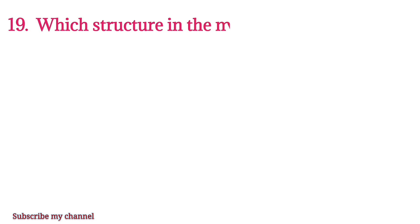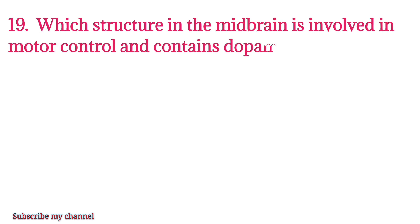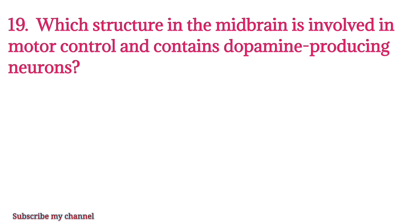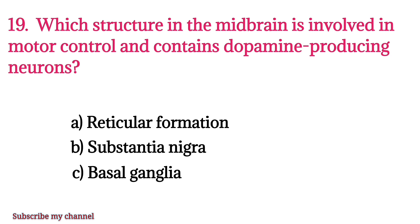MCQ number nineteen: Which structure in the midbrain is involved in motor control and contains dopamine-producing neurons? The right option is option B.